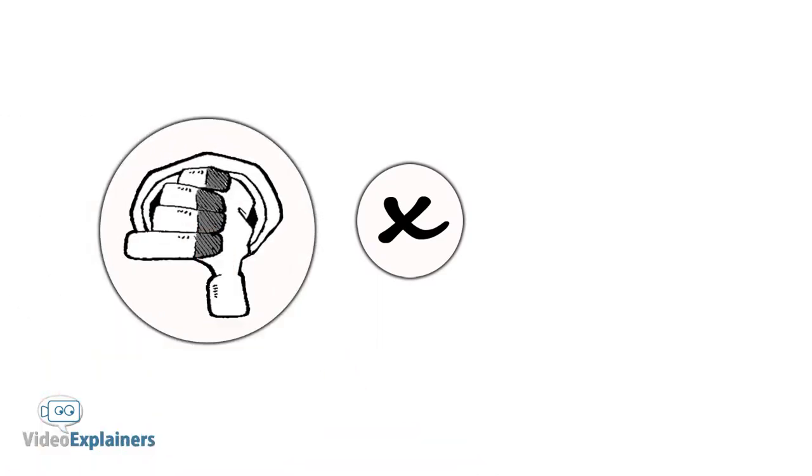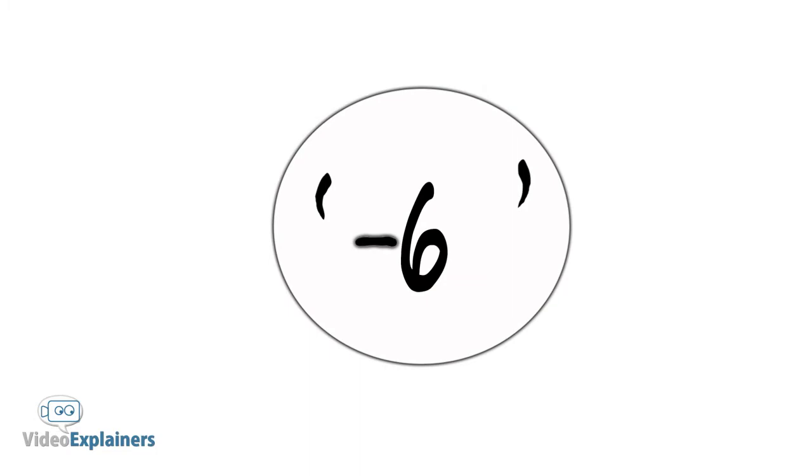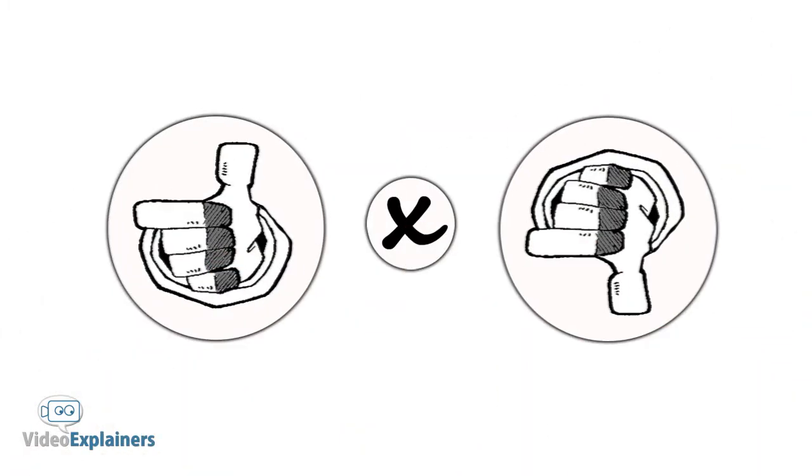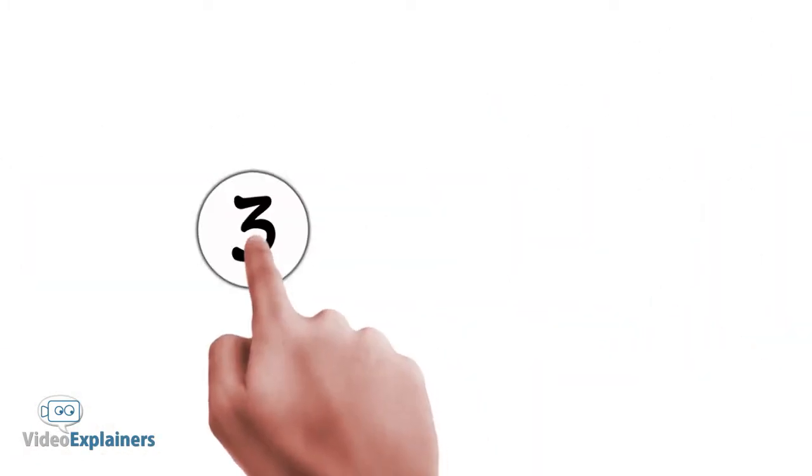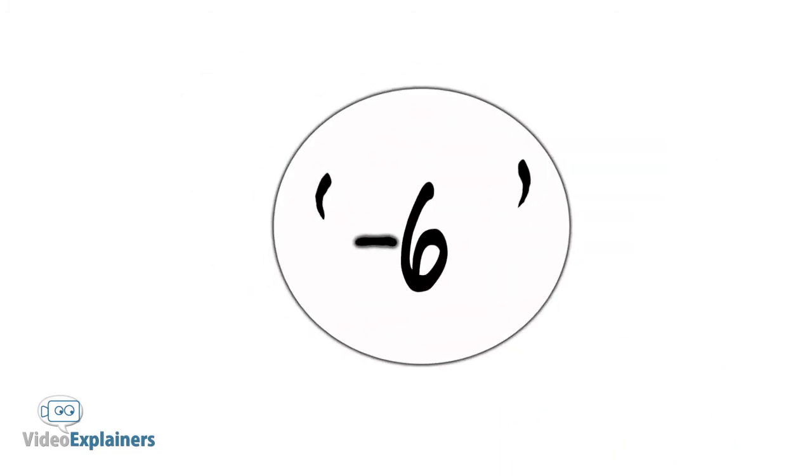When you multiply a negative and a positive, you get a negative. When you multiply a positive and a negative, you get a negative.